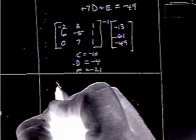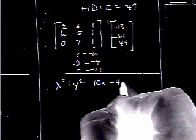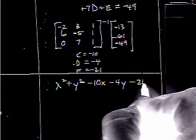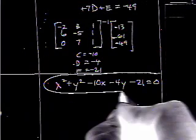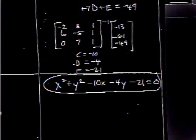So, we have x squared plus y squared minus 10x minus 4y minus 21 equals 0. And, there is our circle. And, we will mess around with that in class. See you later.